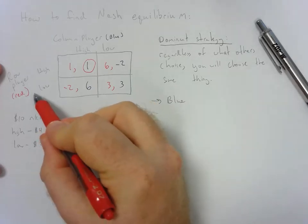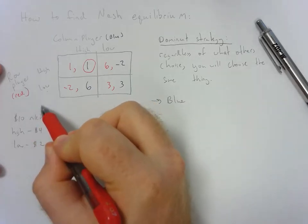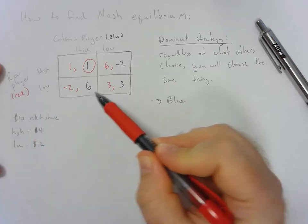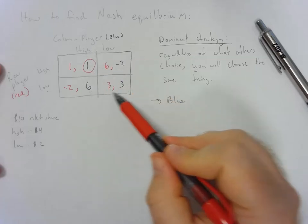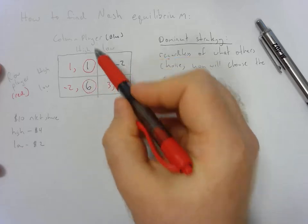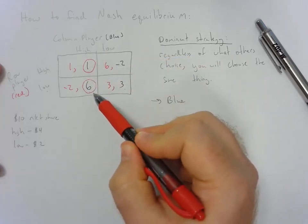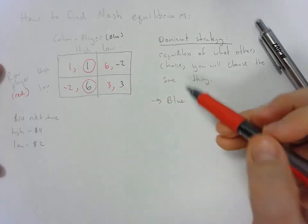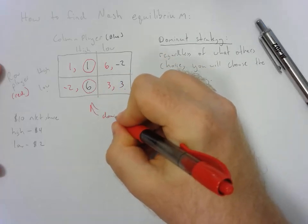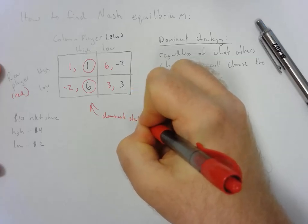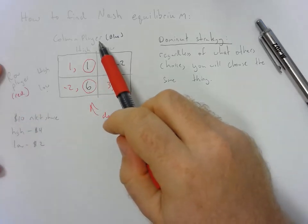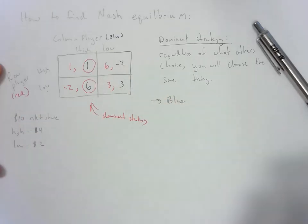Now assume that the row player is going to choose a low amount of advertising. They have a choice between making $6, high advertising, or $3, low advertising. So again, they choose to do high advertising, and they get the $6 payout. So this is a clear example of a dominant strategy. Regardless of what the row player does, it's in the column player's best interest to choose a high amount of advertising.